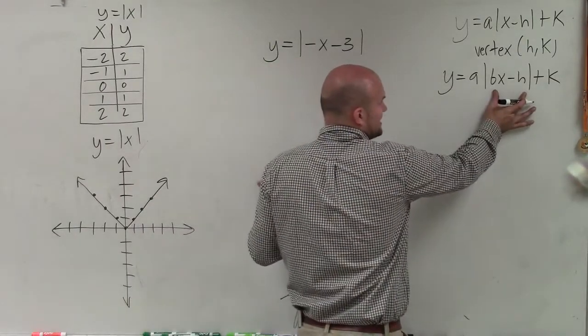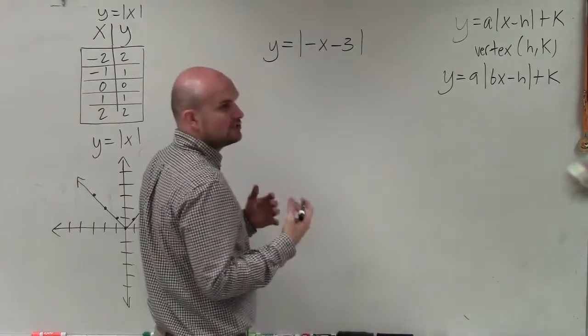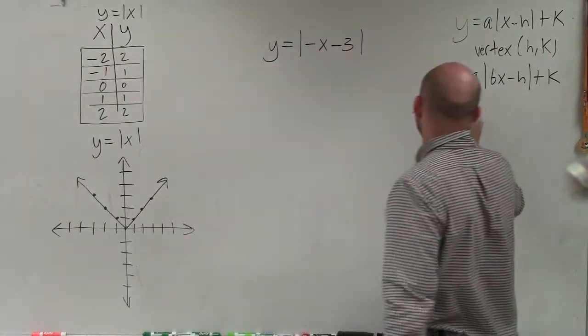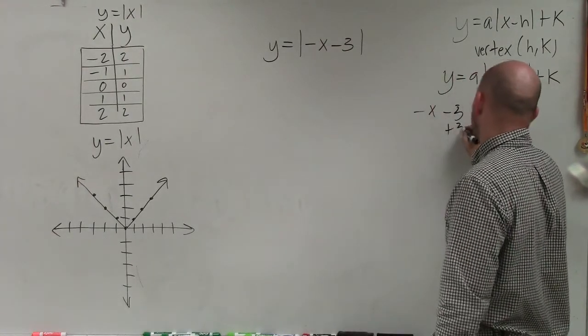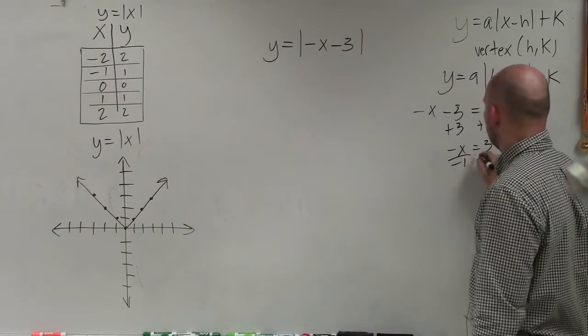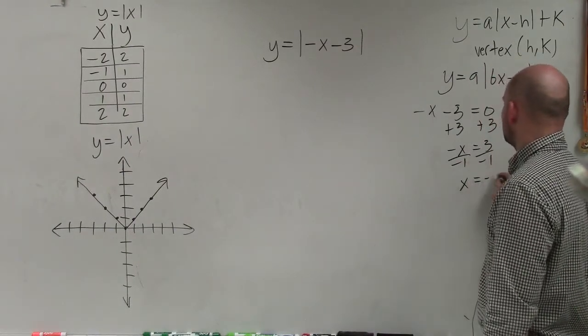So to do that, we take whatever's inside of our absolute value and we set it equal to 0 and solve for the value of x. So I say negative x minus 3 equals 0. Add 3, add 3. Negative x equals 3. Divide by negative 1. x equals negative 3.